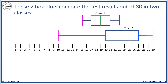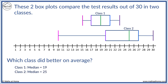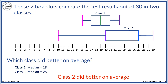For example, these two box plots compare the test results out of 30 in two classes. Which class did better on average? To compare averages, we use the median. Class 1 has a median of 19. Class 2 has a median of 25. Class 2 has a higher median, so it has a higher average. Class 2 did better on average.